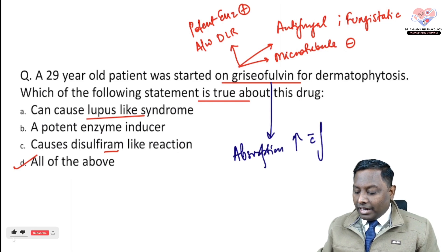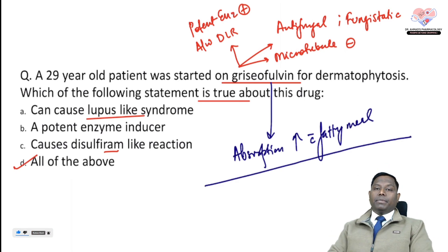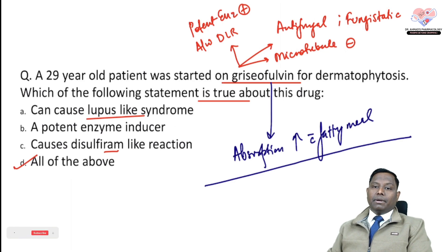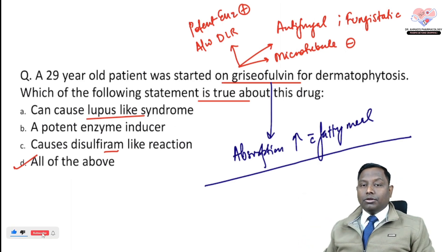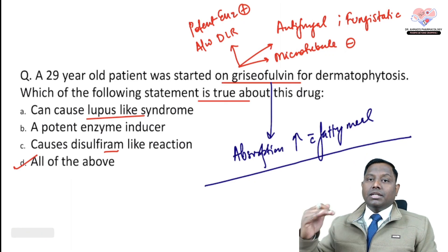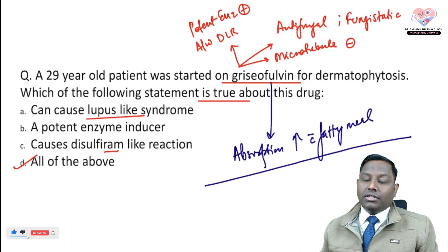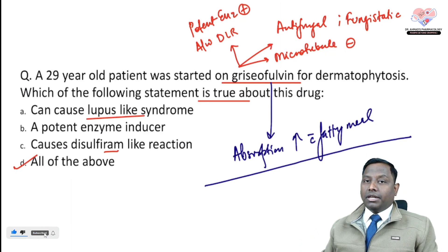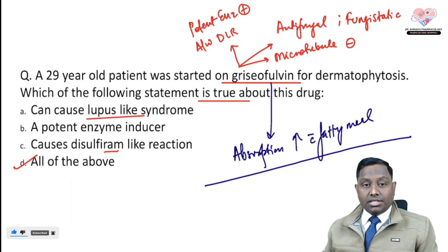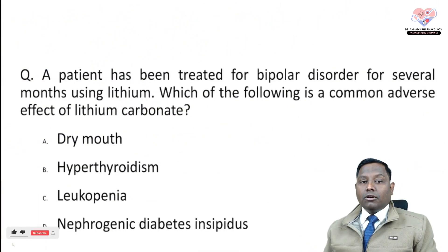We use griseofulvin for the management of dermatophytosis. Although it was previously a drug of choice, due to increasing resistance, the current drug of choice for dermatophytosis is terbinafine, which is a squalene epoxidase inhibitor.